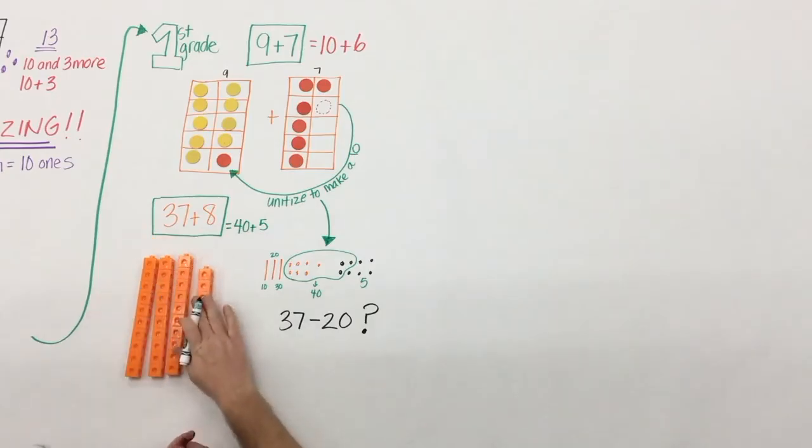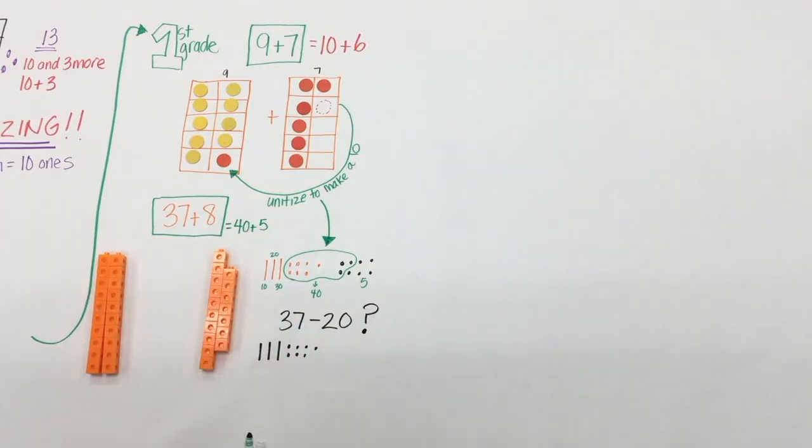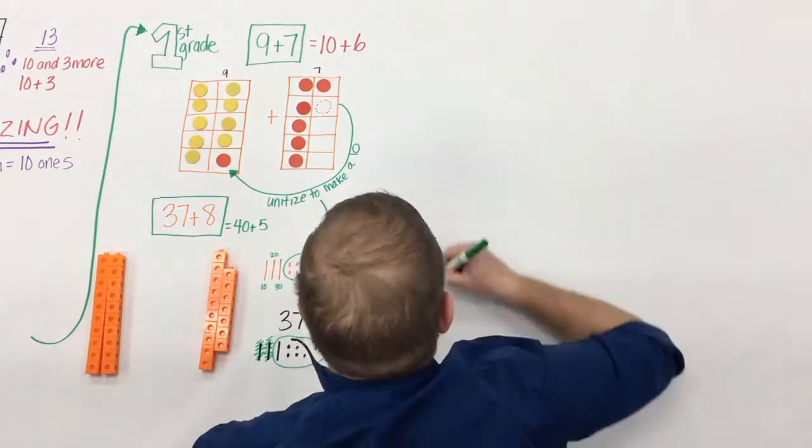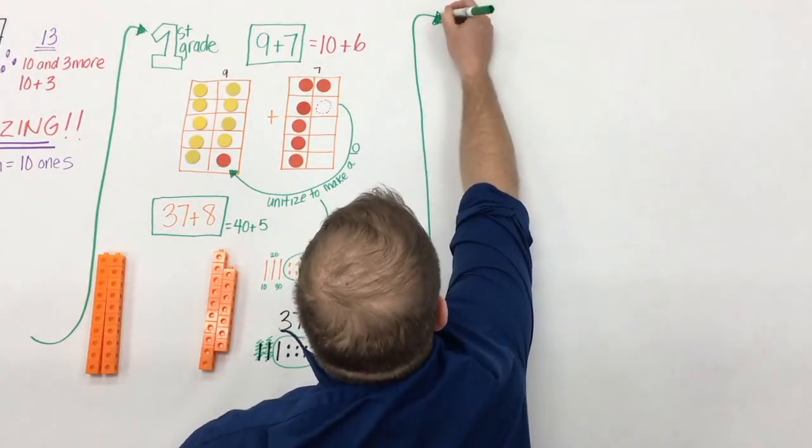So what does this look like with subtraction in first grade? Well, in first grade, students are only subtracting multiples of 10. And here, 37 minus 20, they can see if they removed two 10s, they're left with 17.